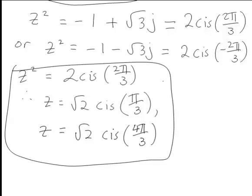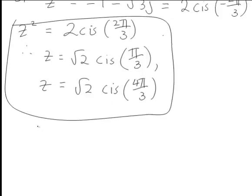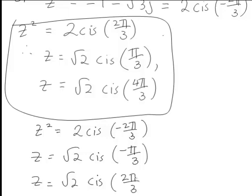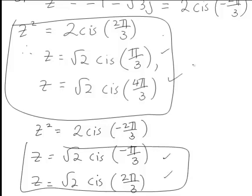For z² = 2 cis(-2π/3), the same principle applies. Both square roots have magnitude √2. The first is √2 · cis(-π/3), and adding π gives the second: √2 · cis(2π/3). We now have all four solutions for z in polar form.